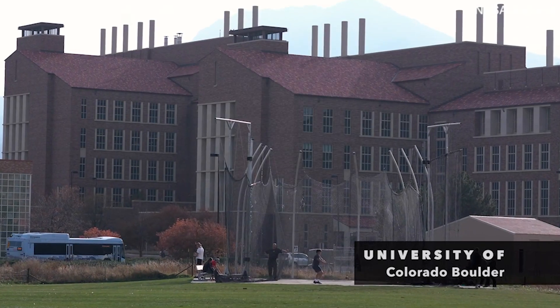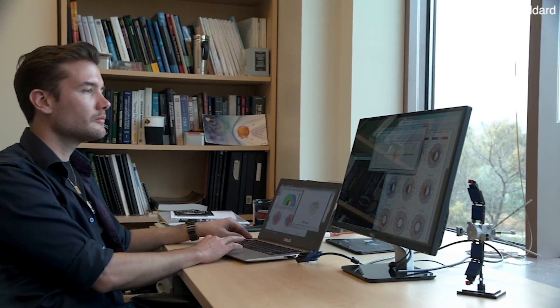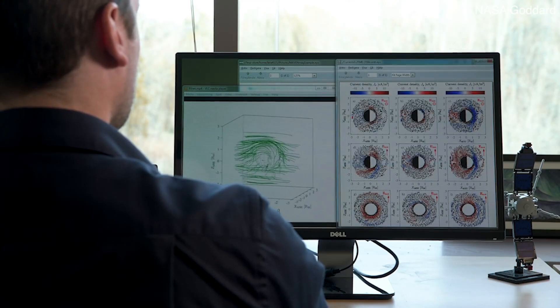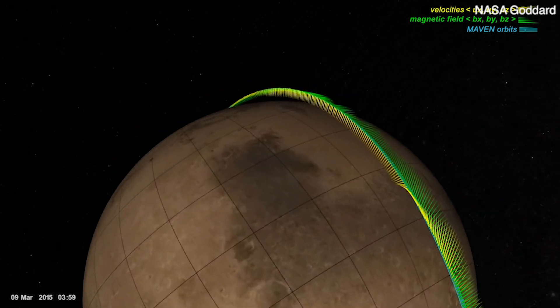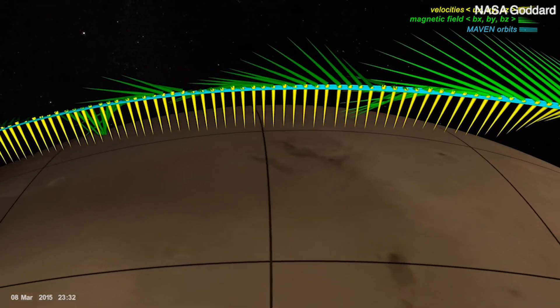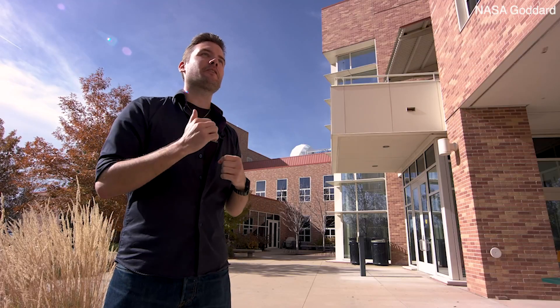When you just look at the data as it comes down, you're just seeing a little squiggly line essentially. You're seeing the magnetic field's strength and its direction vary as the spacecraft is flying through different regions. What you have to do is you have to actually map it to the planet and to this interaction with the solar wind, and then it starts to emerge that you have a drape situation where the magnetic field from the solar wind encounters the planet and starts to wrap around it. The reason it wraps around the planet is those electric currents that we are seeing.